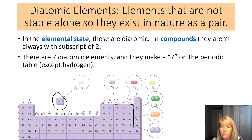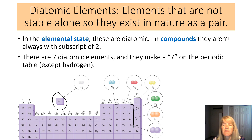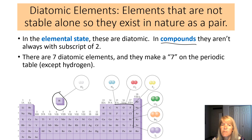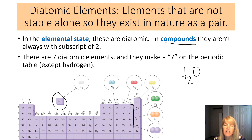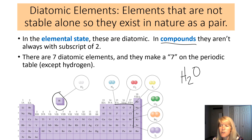The reason diatomics matter is that when you see oxygen or hydrogen in a reaction, it won't be written as just H or just O — it will have a subscript of 2. However, in a compound like H₂O, the hydrogen is part of the compound so the diatomic rule doesn't apply. But pure oxygen by itself is always O₂.